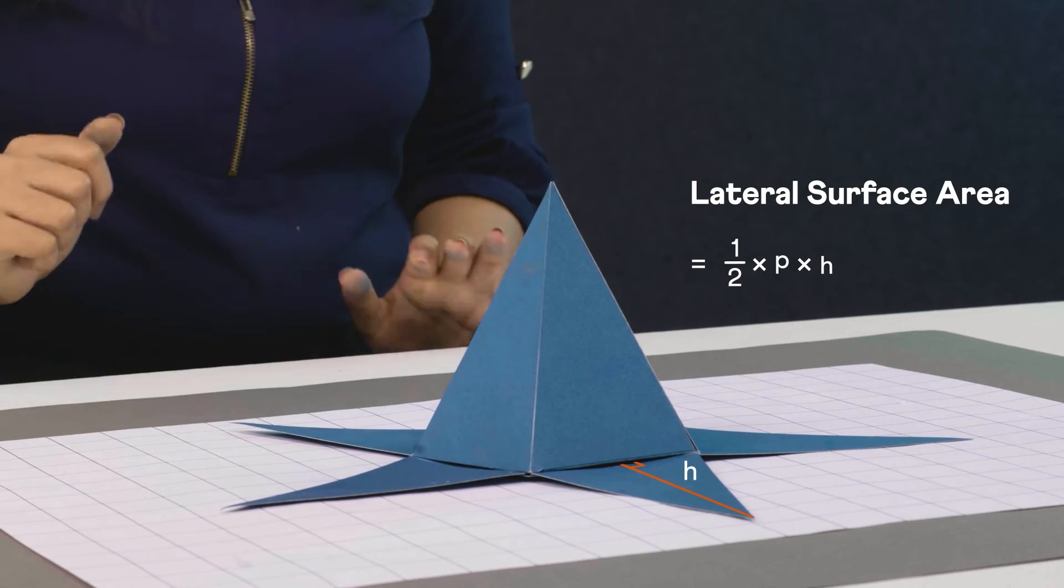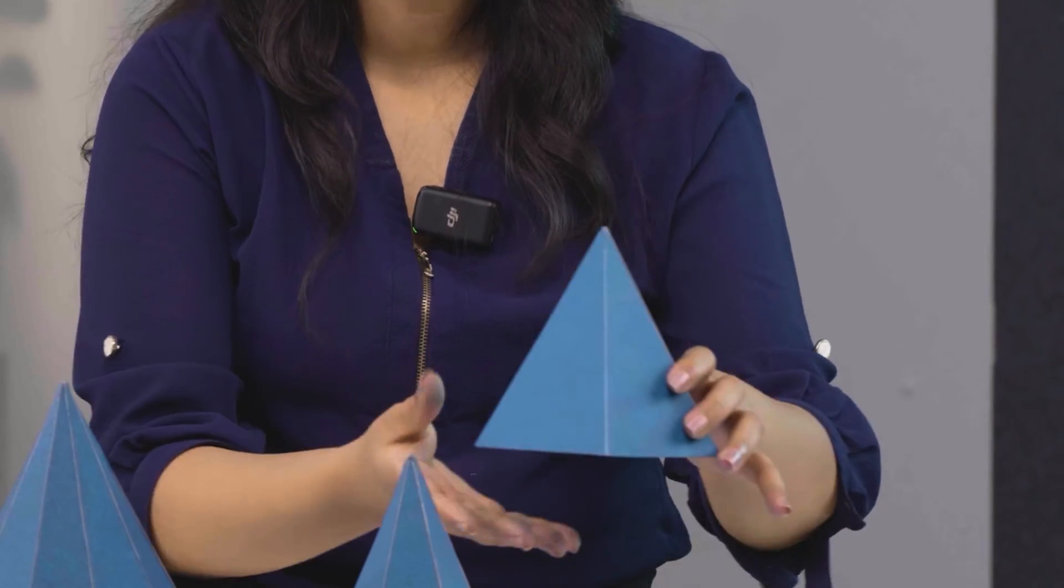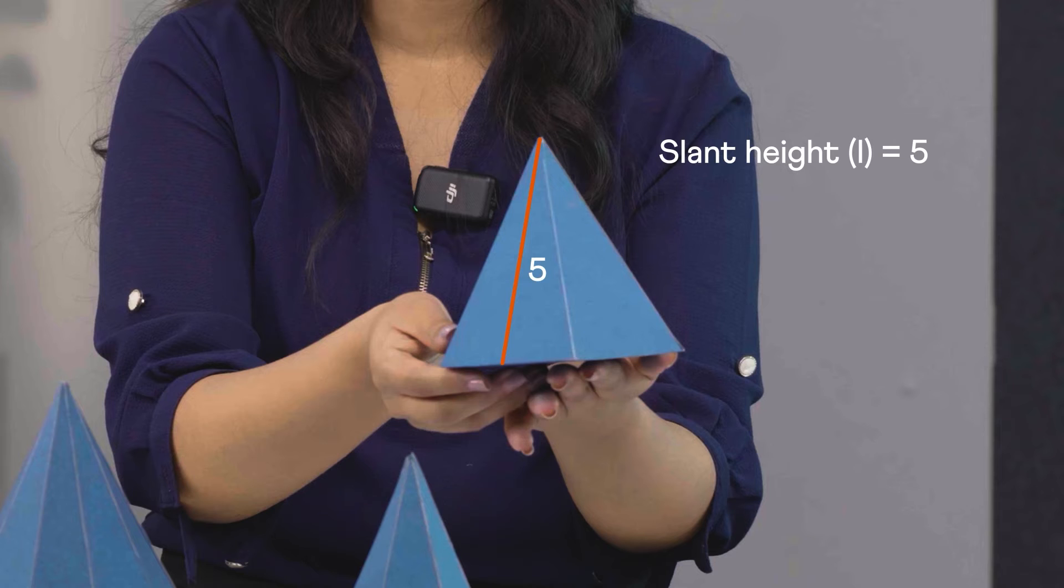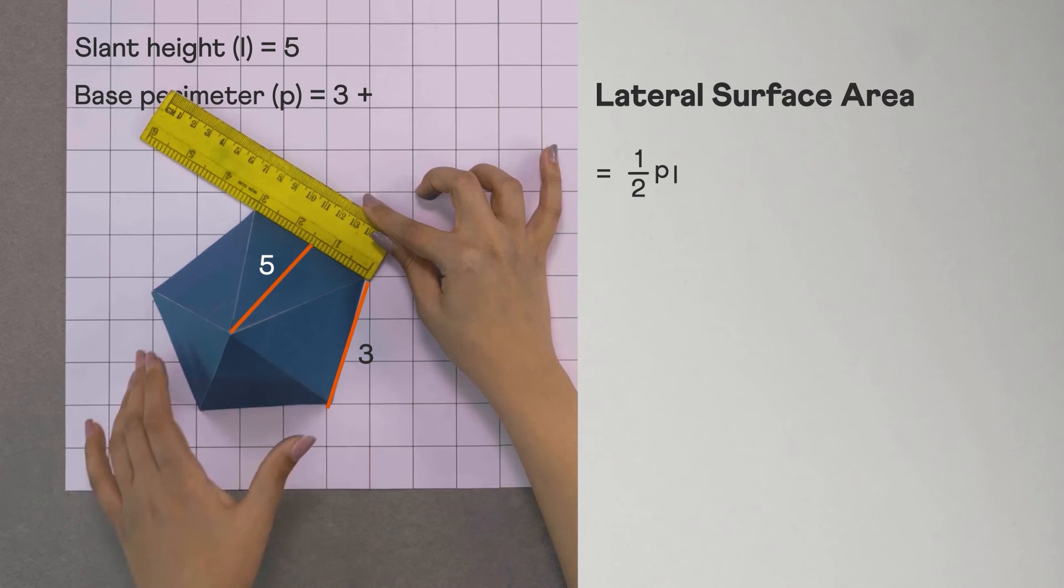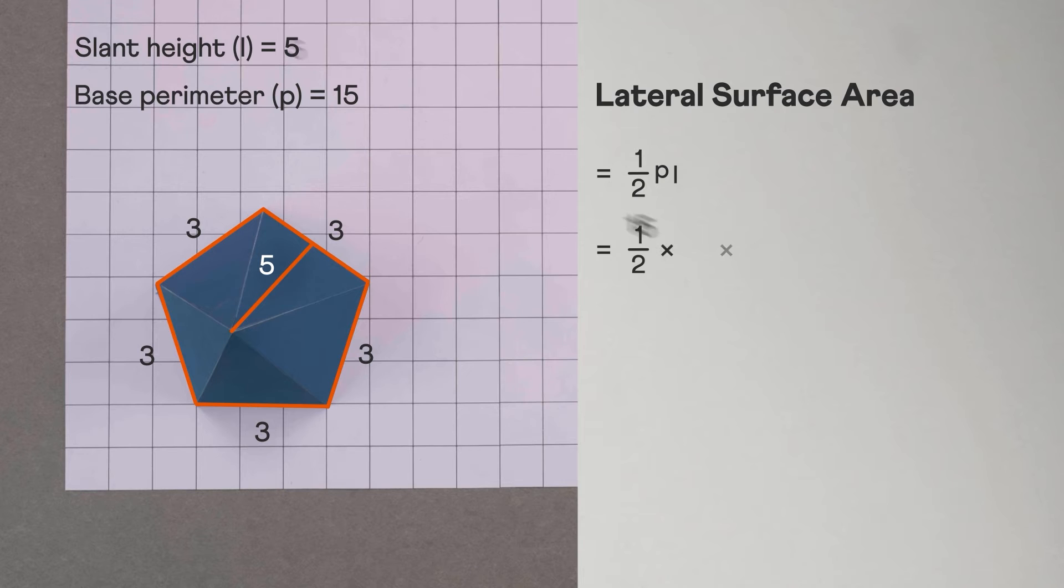By the way, this height is called the slant height of the pyramid. Now let's measure the slant height of this pyramid and the perimeter of its base and plug in the values. We get its lateral surface area as 37.5 square units.